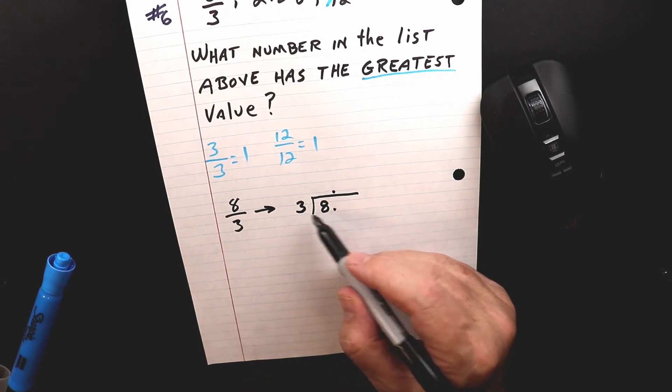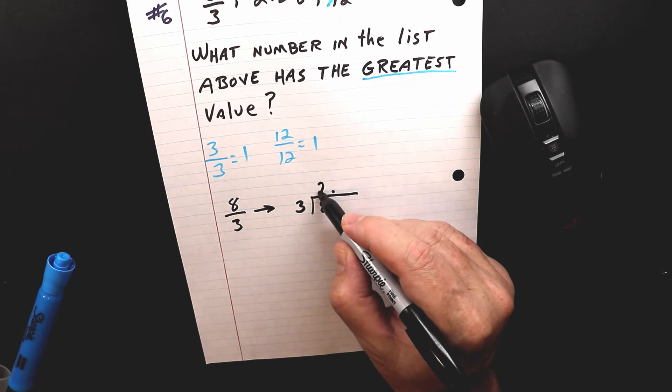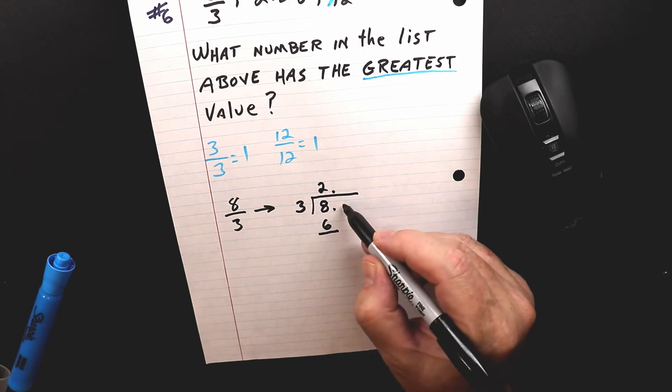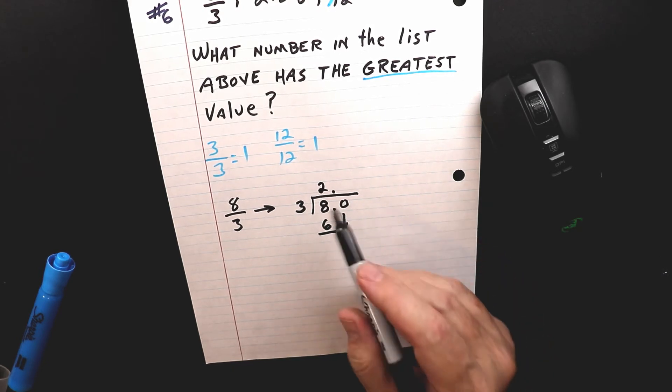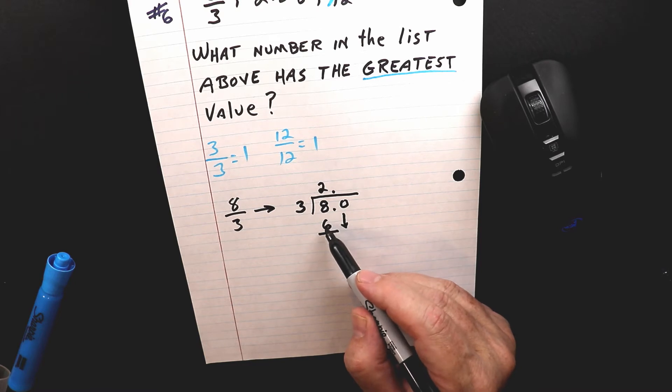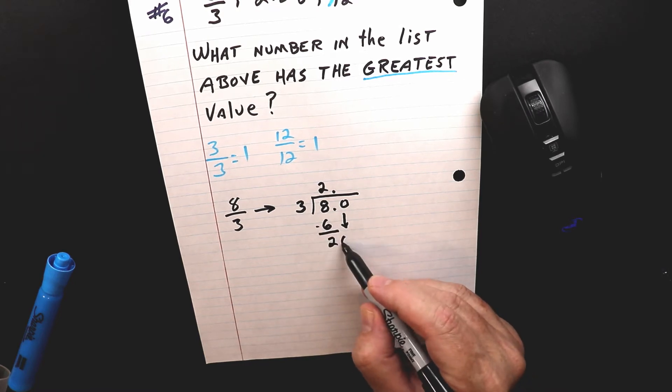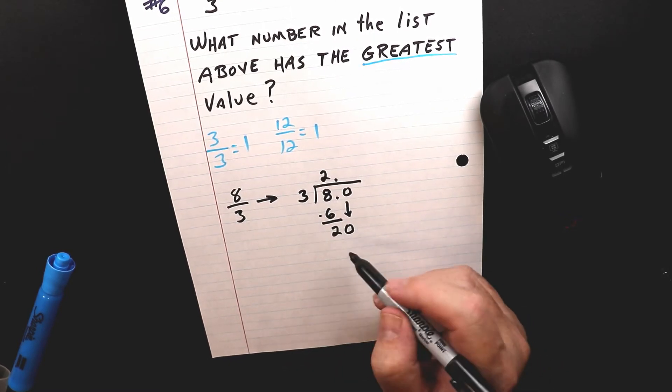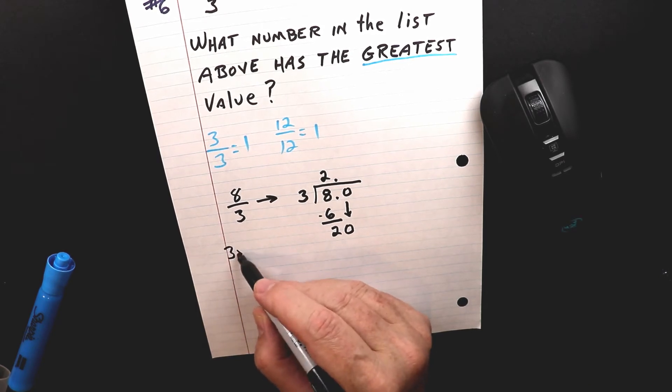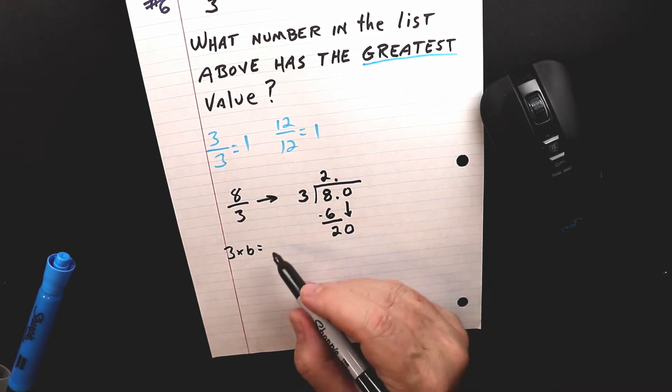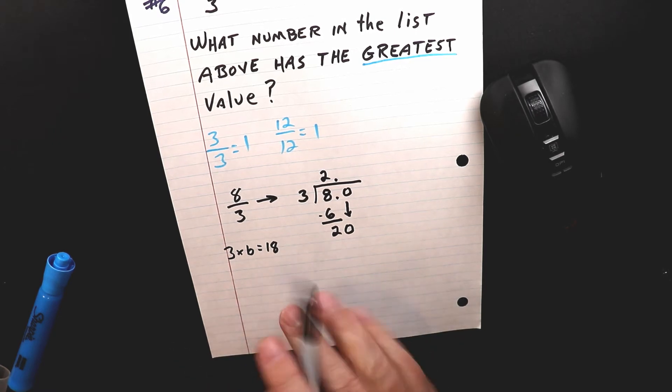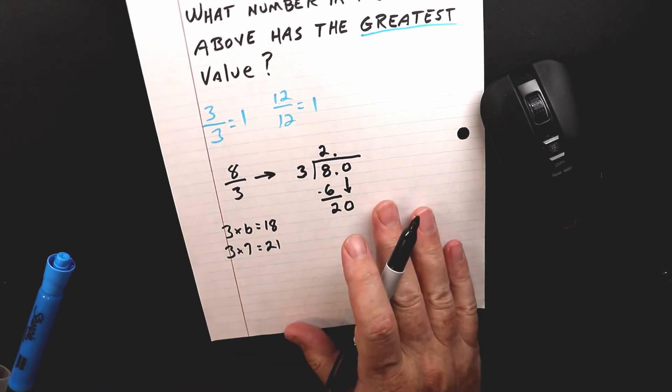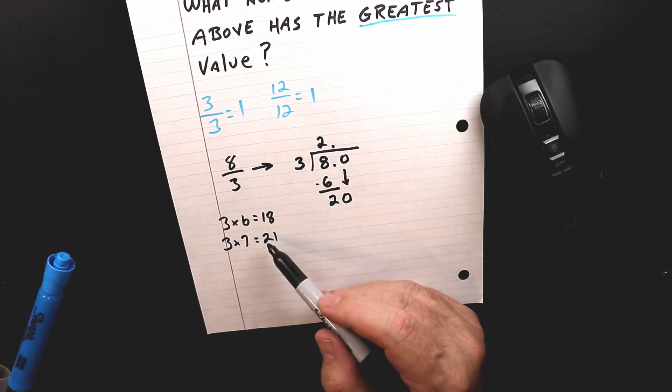Now 3 goes into 8. 3 goes into 8 two times. 2 times 3 is 6. Now put a 0 there. 8 minus 6 is 2. 3 goes into 20 six times. 3 times 6 equals 18. And just so you know, 3 times 7 equals 21. Now at this point you should be able to do multiplication like this.